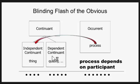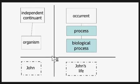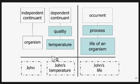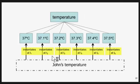A lot of this will be familiar from Dolce, and BFO grew up originally as part of a collaboration with Dolce around 1998, so the fundamental ideas are very similar. We have John who is an organism, John's life which is a process, and John's temperature which is a quality of John. John's temperature is the name of a certain quality which endures from the beginning to the end of John's existence but instantiates different sub-qualities of the temperature quality at different times.